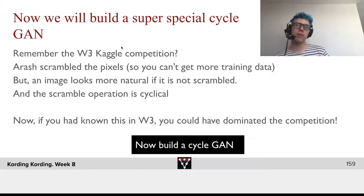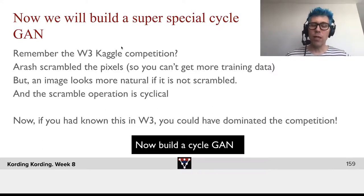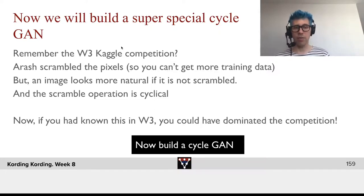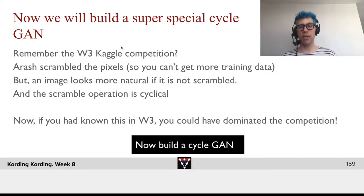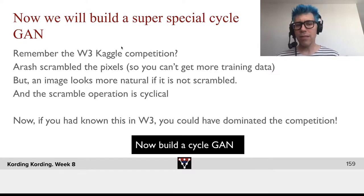What we will do is build a super special cycle GAN. Do you remember in week three, we had this little Kaggle competition of animal faces? Arash made things difficult — he scrambled the images. Why was that a great idea? Well, if he hadn't scrambled them, you could have produced an extra training set, maybe from the ImageNet dataset, and gotten better through it, or used the ConvNet for that. He explicitly wanted to prevent you from doing that by scrambling the images so you couldn't get any more training data. But I believe we can find out how to unscramble them, because if an image is not scrambled, it will look more natural.